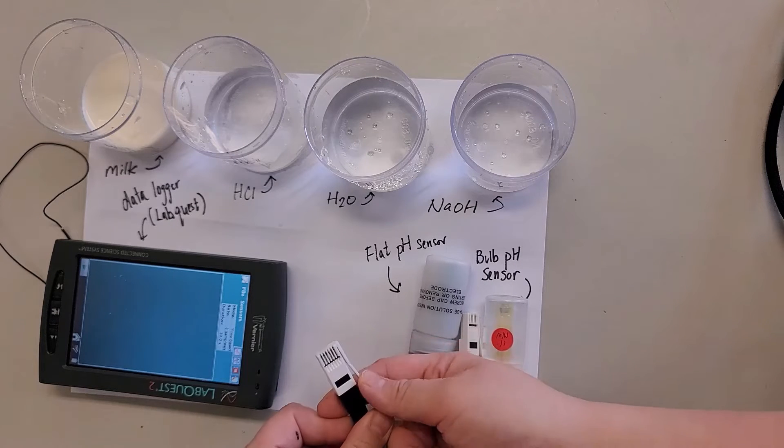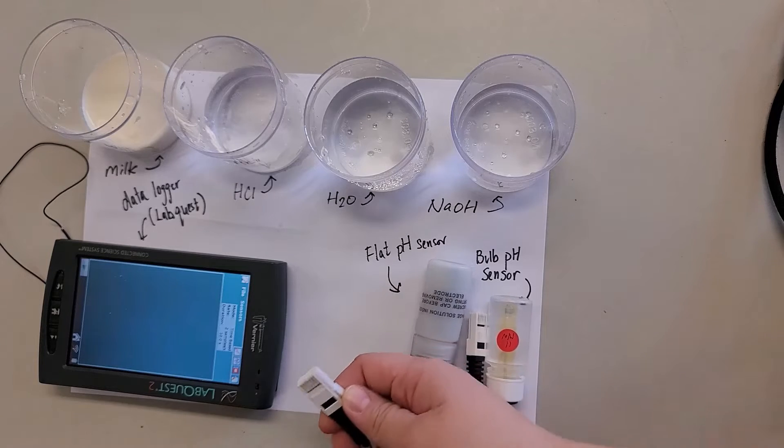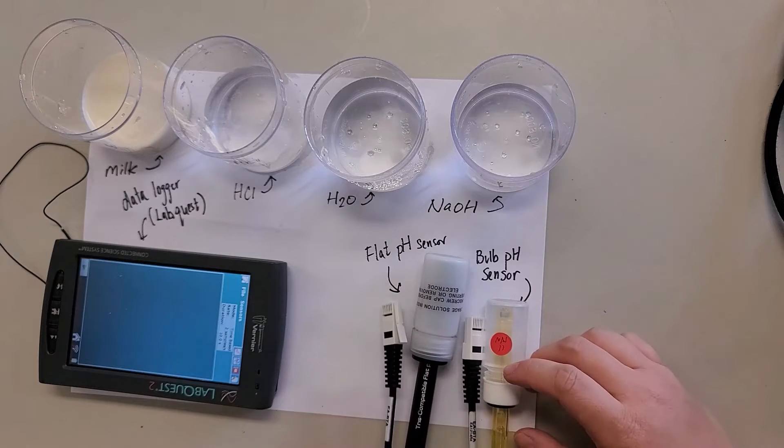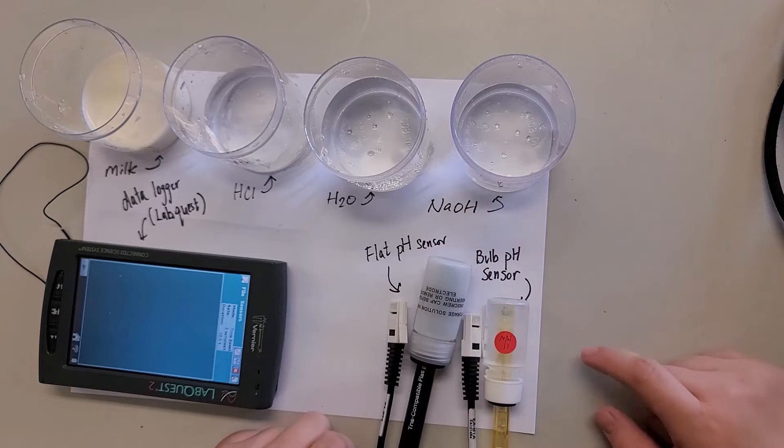When you use it, you need to press it to insert. And then when you need to take it out, you need to press it and it's coming out. So that's the idea of how the sensors are used with the data logger.